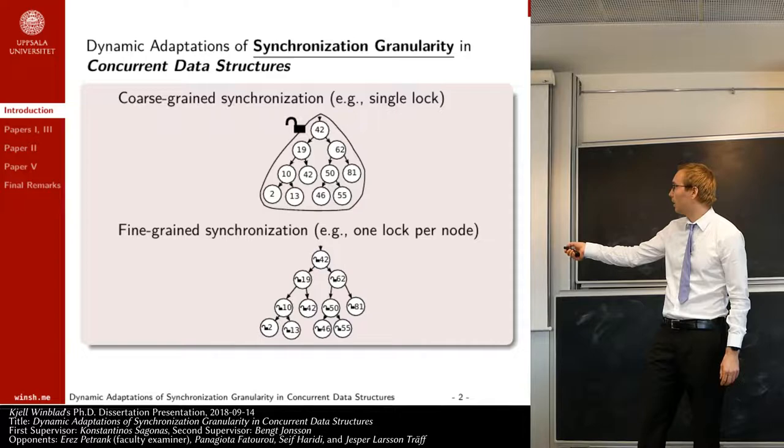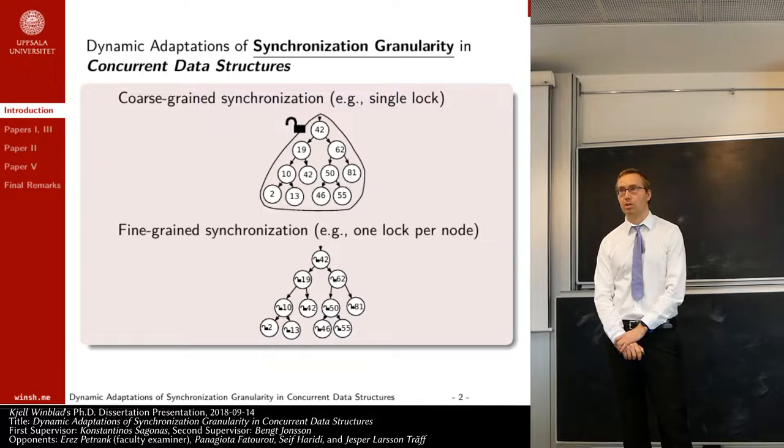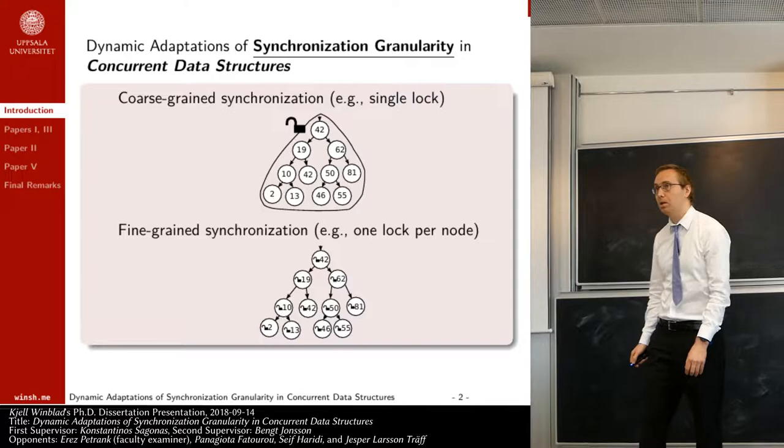Here all accesses are protected by a single lock structure. In the bottom is an example of a data structure that uses fine-grained synchronization. As you see, we have a lock structure in all of the nodes in the data structure.